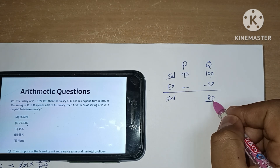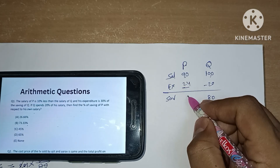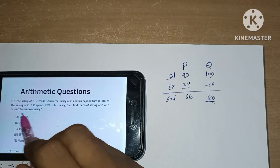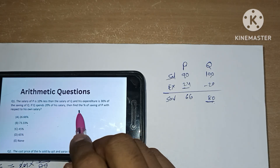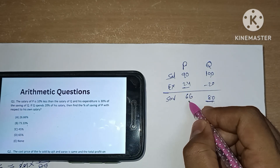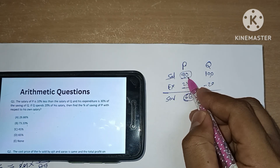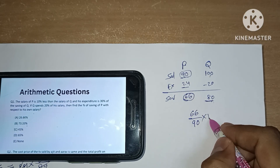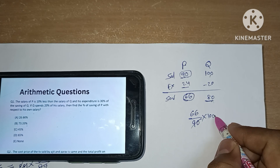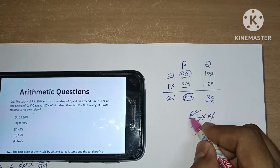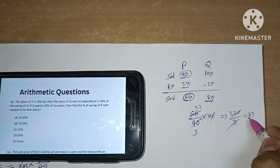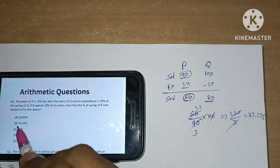P's expenditure is 30% of 80, which is 24. So P's savings is 90 minus 24, which is 66. The question asks: savings is what percentage of P's own salary? So we calculate 66 over 90, which simplifies to 220 divided by 3, giving us 73.33%. Option B is our answer.